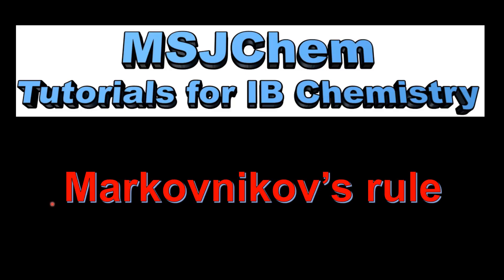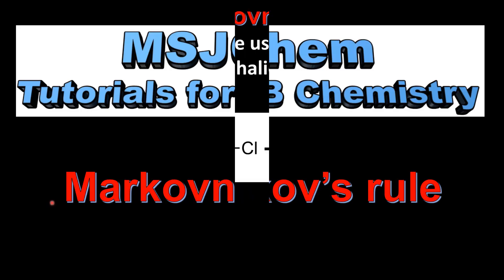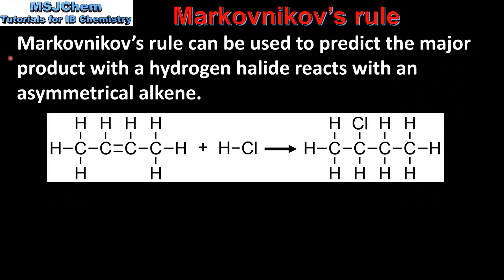This is MSJChem. In this video I'll be looking at Markovnikov's rule. Markovnikov's rule can be used to predict the major product when a hydrogen halide reacts with an asymmetrical alkene.